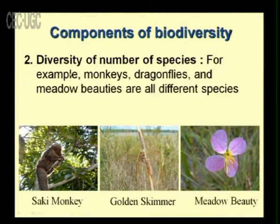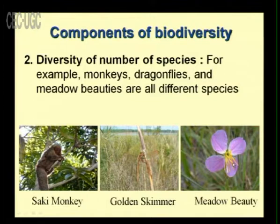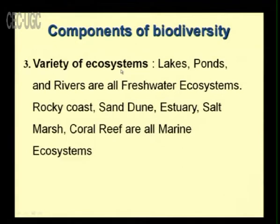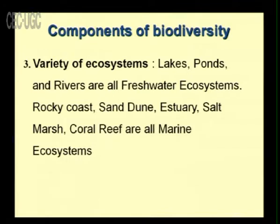The second component is the diversity of number of species. For example, monkeys, dragonflies, and meadow beauties are all different species. Biodiversity means the number of species existing at a particular point. The third component is the variety of ecosystems — lakes, ponds and rivers are freshwater ecosystems; rocky coast, sand dune, estuary, salt marsh and coral reef are marine ecosystems. Biodiversity requires a variety of ecosystems existing in a particular area.